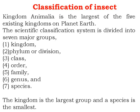Classification of insects involves different categories by which an insect is classified. Kingdom Animalia is the largest of the five existing kingdoms on planet Earth. The scientific classification system is divided into seven major groups: kingdom, phylum or division, class, order, family, genus, and species. The binomial nomenclature system is followed in insect classification. The kingdom is the largest group and the species is the smallest group.